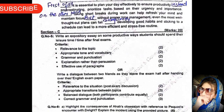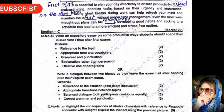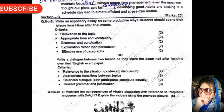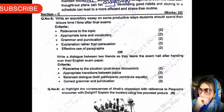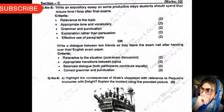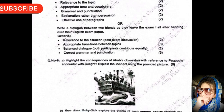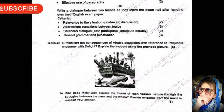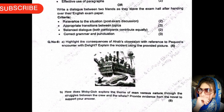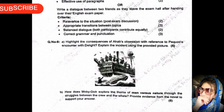Section C, question number five: write an expository essay on some productive ways students should spend their leisure time after final exams, or write a dialogue between friends as they leave the exam hall after handing over their English exam paper — you have a choice. Question number six: highlight the consequences of Ahab's obsession with reference to Piquod's encounter with the white whale. Explain the incidents using the provided picture.